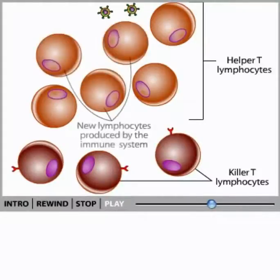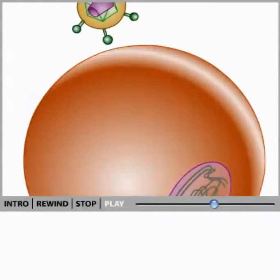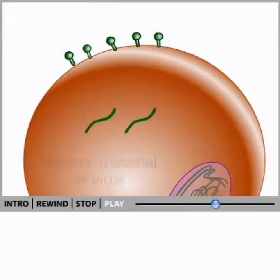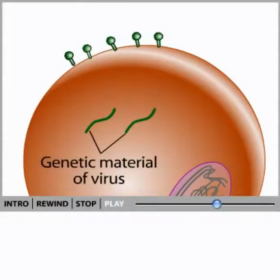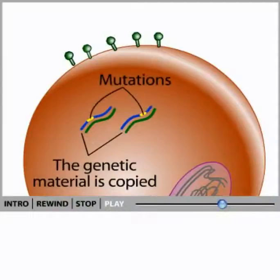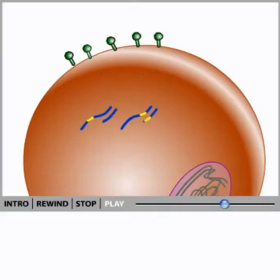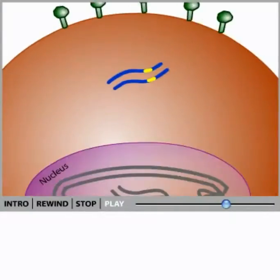The immune system works hard trying to replenish the supply of helper T lymphocytes. However, HIV continues to infect new cells, and in the process it often mutates. These mutations occur after the virus enters the cell and begins to make copies of its genetic material. This process is error-prone and mutations are frequently incorporated into the HIV genome.